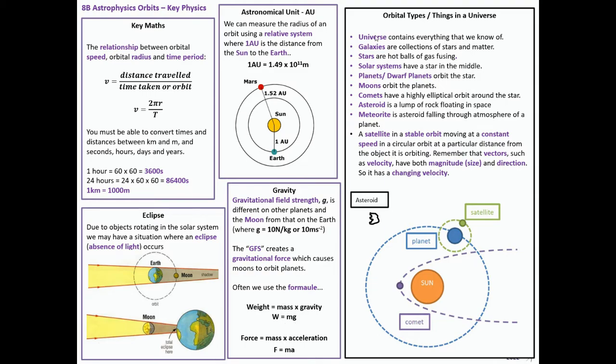Now, things in the Universe. I see no end of people making a mess of it. It's simple. You've got to learn. Universe contains everything we know of. The galaxies are collections of stars and matter. The stars are just hot balls of gas fusing. There's one. It's called the Sun, but it's actually a star. Solar systems have a star in the middle. There could be a solar system. We've got planets and dwarf planets. They orbit the star. Dwarf planets are very small planets that are not really big enough to be called a planet, and their gravity is pretty weak. So we call them a dwarf planet.